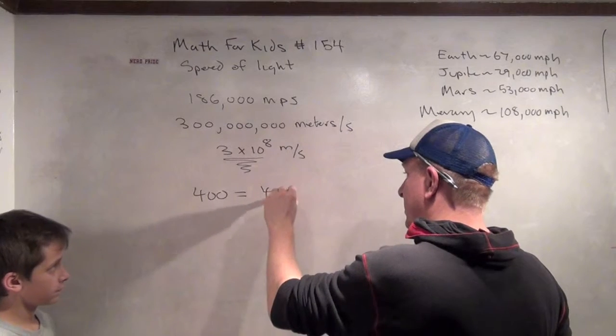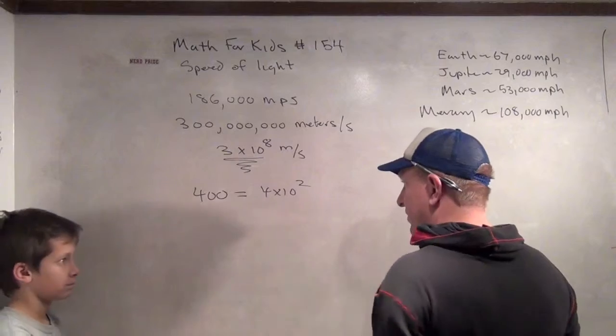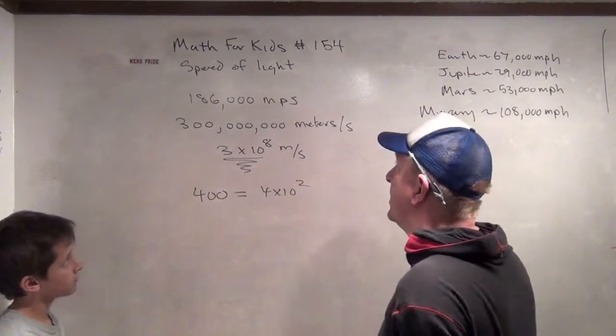It would be 4 times 10 squared. Right. 4 times 10 squared. Most people would write 400 instead of 4 times 10 squared. But for 3 times 10 to the 8th.